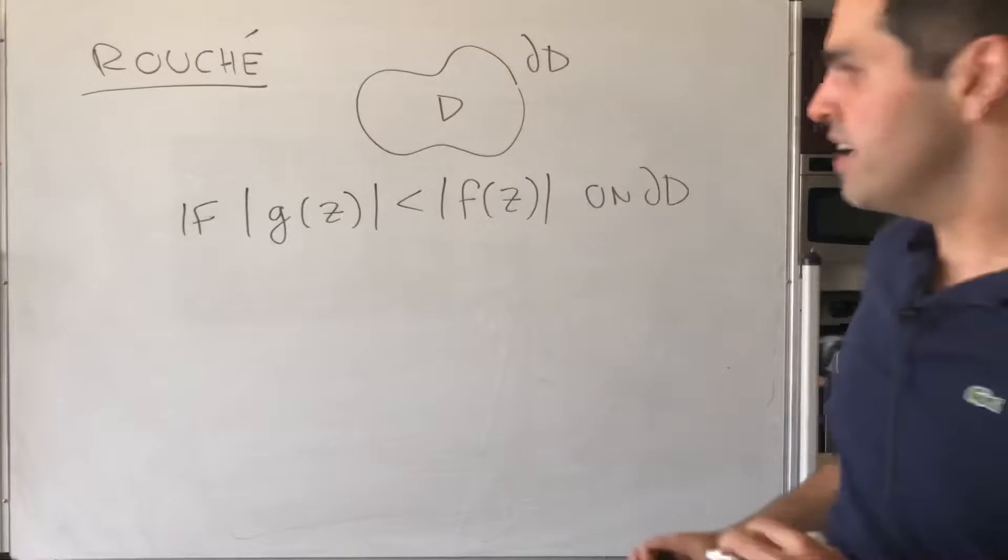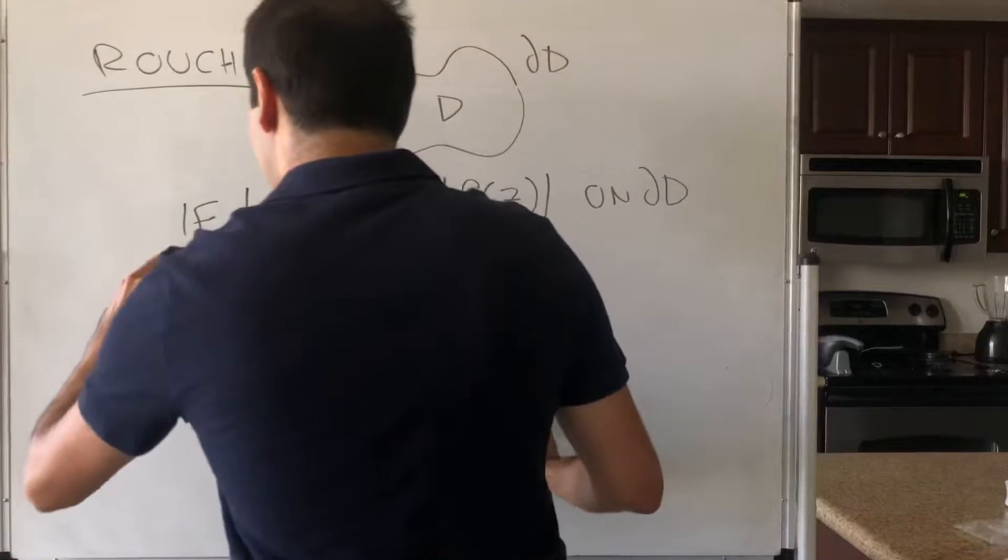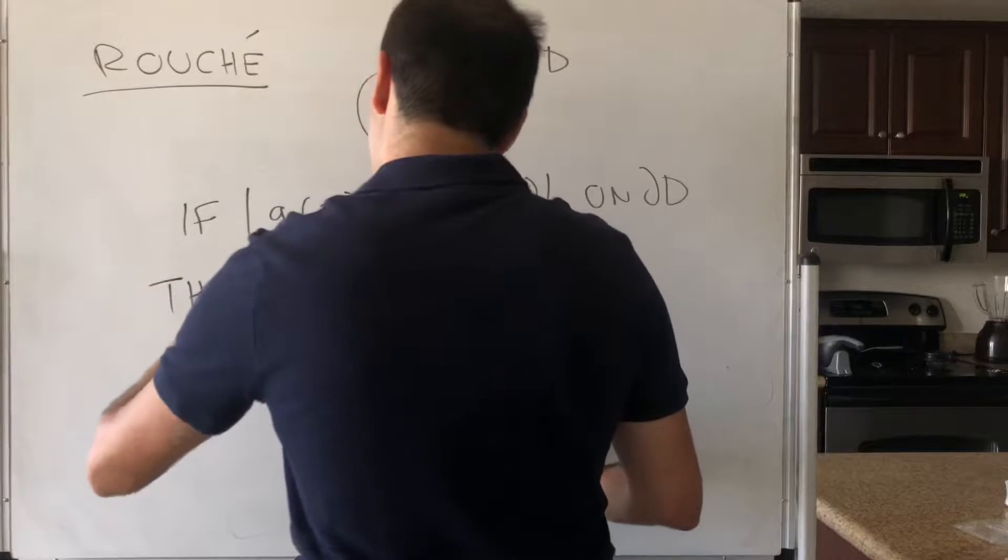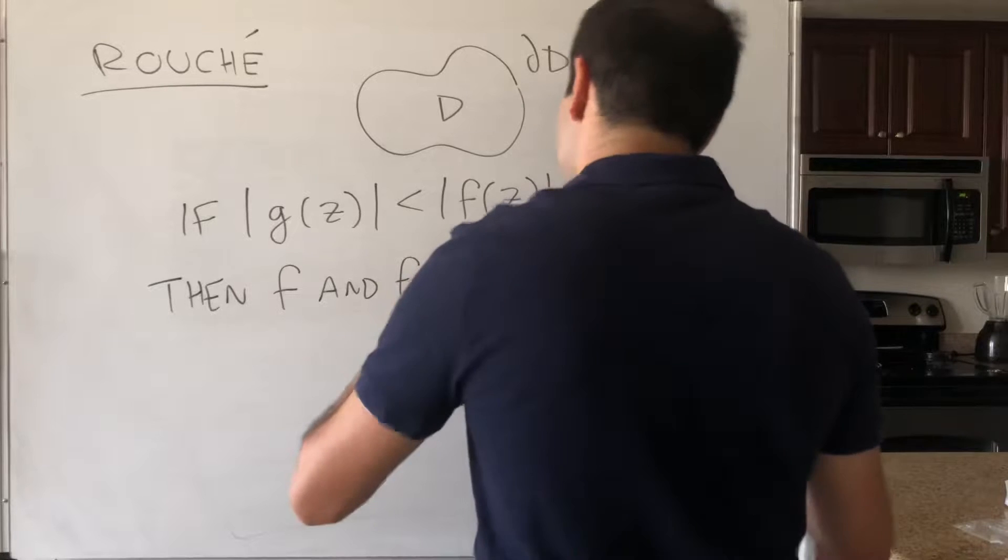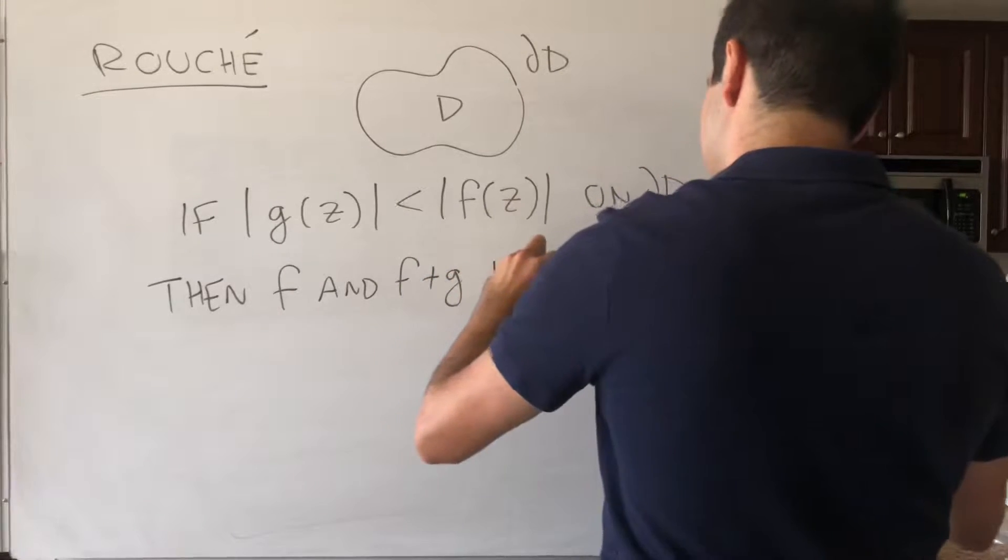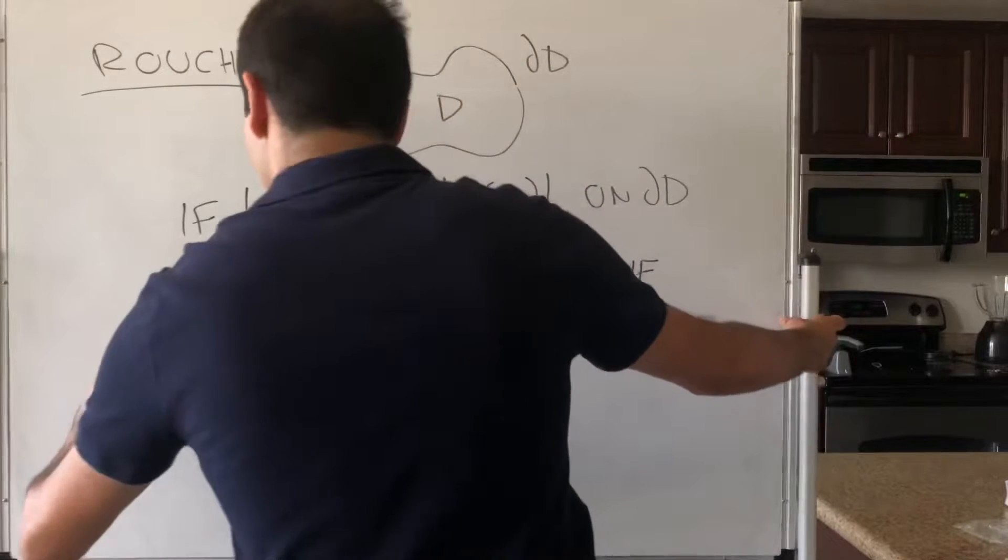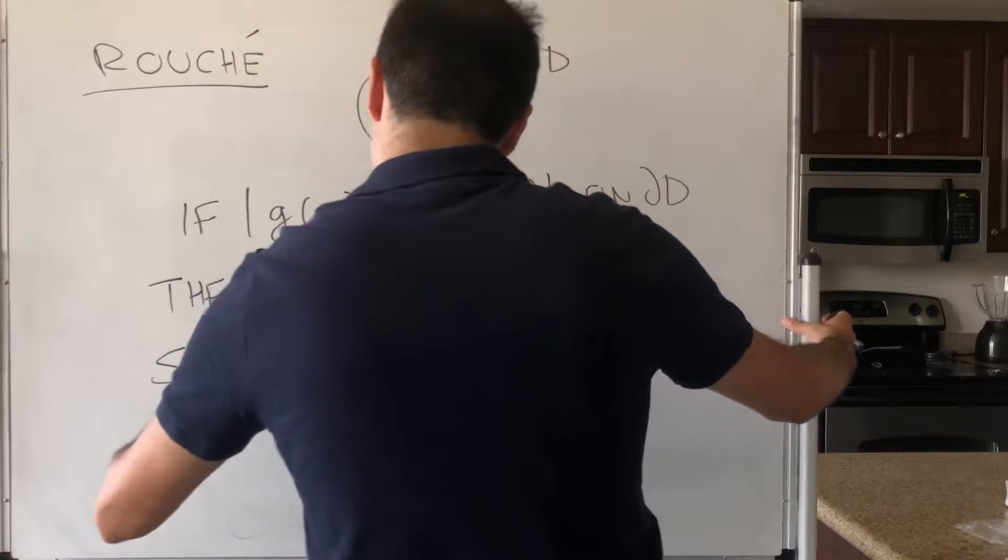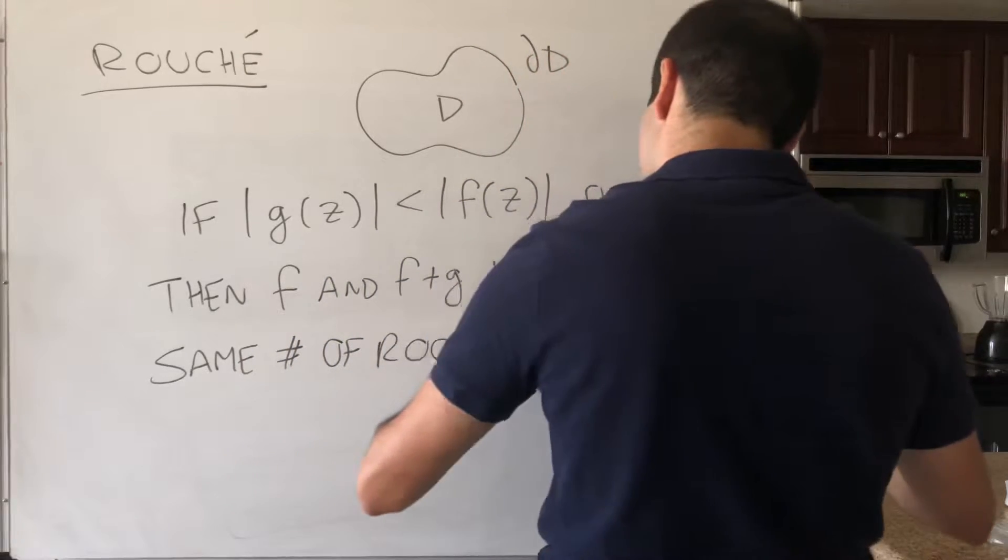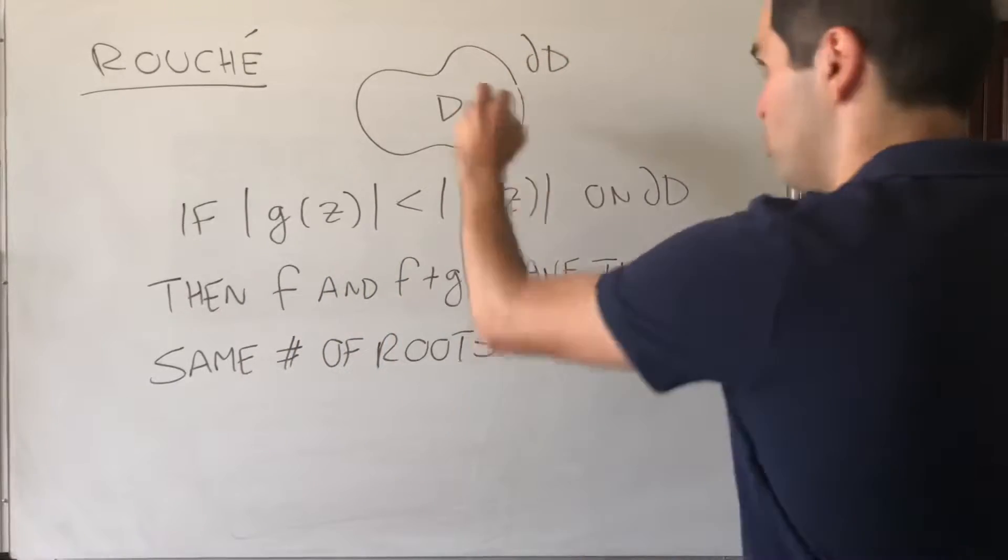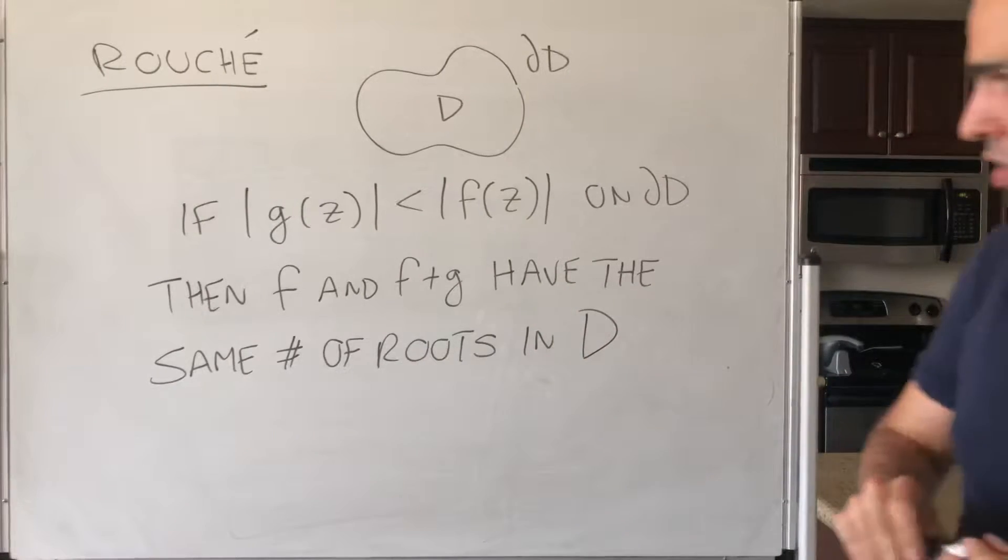More precisely what this says, if F dominates G, then F and F + G have the same number of roots inside the open and bounded region. So again, just to reiterate,